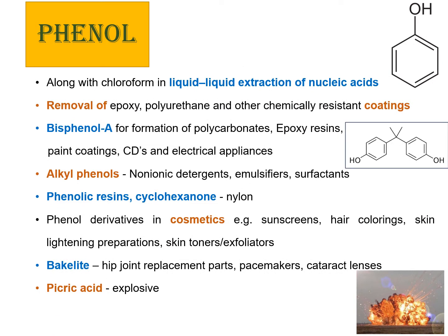First and foremost, phenol — a benzene ring containing a hydroxyl group. Phenol can be used along with chloroform in extraction of RNA or DNA based upon the pH of the solution. It can even be used for removal of certain coatings. There are plenty of derivatives which phenol can form with defined uses: bisphenol A is used in production of polycarbonates, epoxy resins, paint coatings, CDs, and electrical appliances. Alkylphenols are used in detergents and surfactants. Phenolic resins are used to form nylon 6,6.